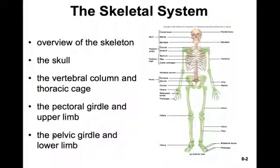We'll begin by taking an overview of the skeleton. The skull is our first endeavor. The skull is very complicated and it can certainly feel really overwhelming, but just breathe and take some time. We're going to learn a lot of different features in the skull. Then when we move into the vertebral column and thoracic cage, things will become a little less overwhelming. The pectoral girdle and upper limbs, and then the pelvic girdle and lower limbs — after the skull, those should seem pretty simple.